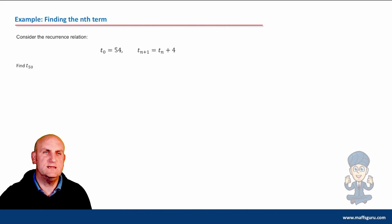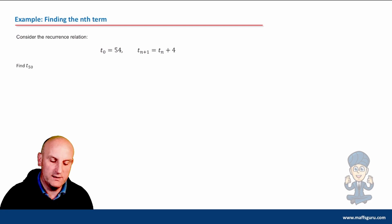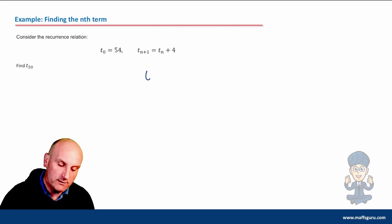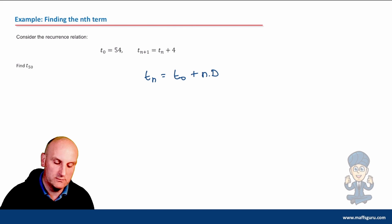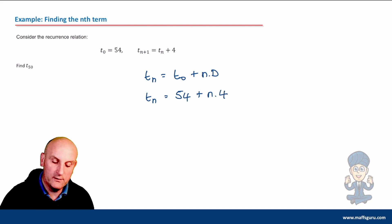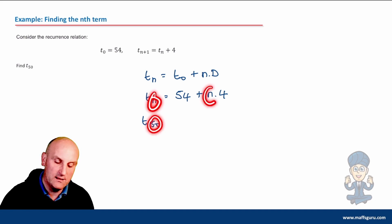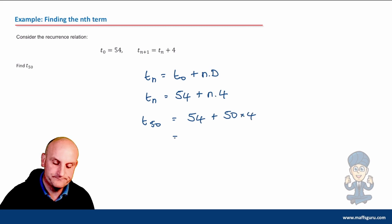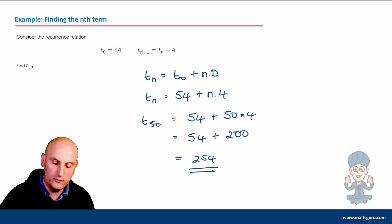Another example: consider the recurrence relationship T₀ equals 54, T of n plus 1 equals T of n plus 4. Find T₅₀. This is a plus rule, so Tₙ equals T₀ plus n times d. My nth term is 54 plus n times 4. They want T of 50, so n becomes 50 — giving me 54 plus 50 times 4. 50 times 4 is 200, so it gives me 254.